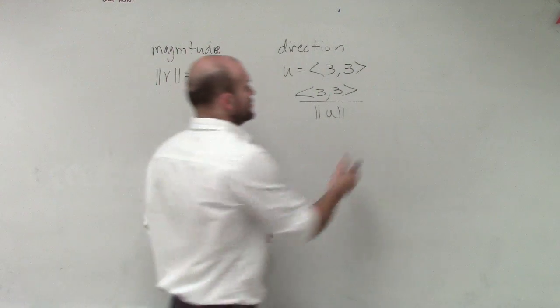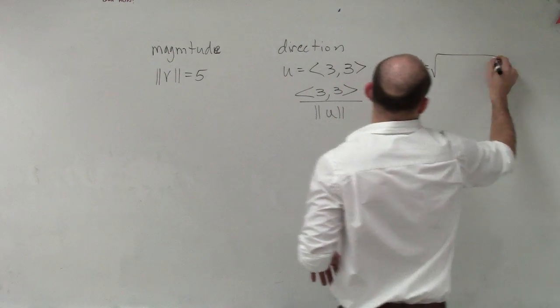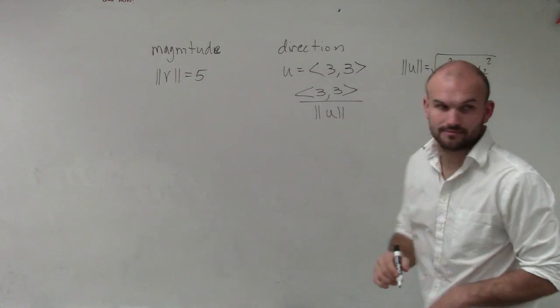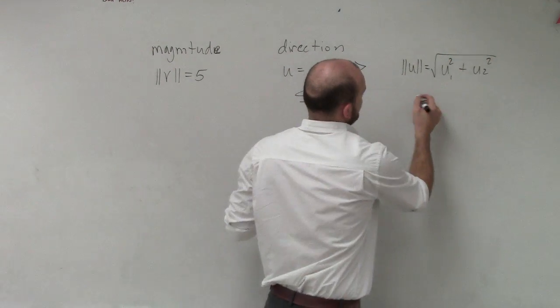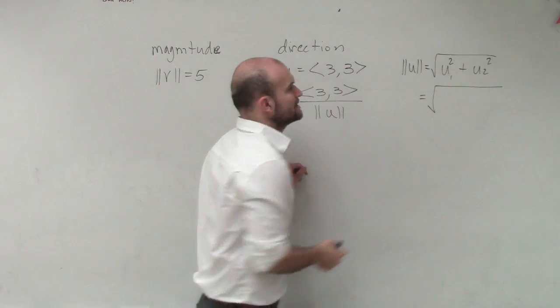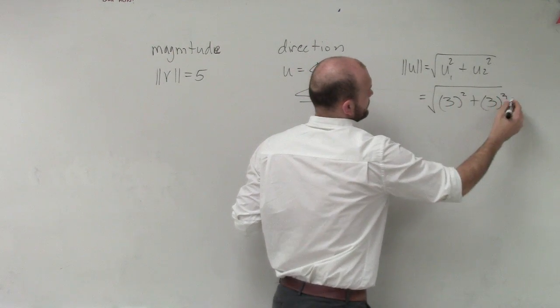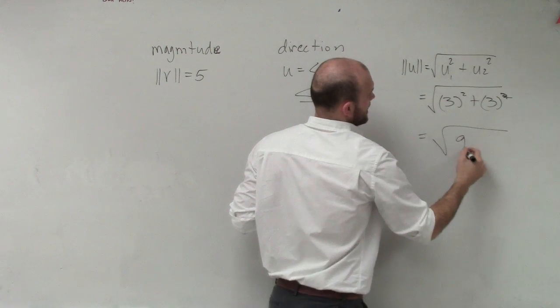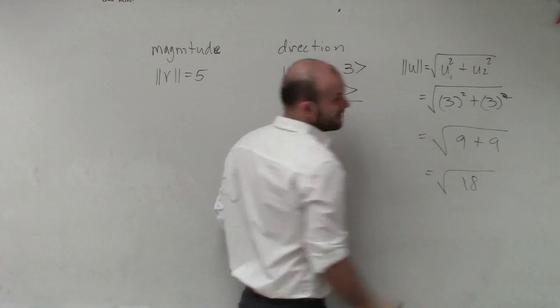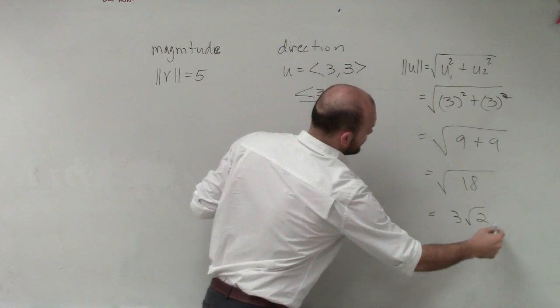Remember, the magnitude of u is going to be the square root of u1 squared plus u2 squared. So u1 is going to be 3 squared plus 3 squared, which equals 9 plus 9, which equals the square root of 18. Then we can simplify that into 3 radical 2.